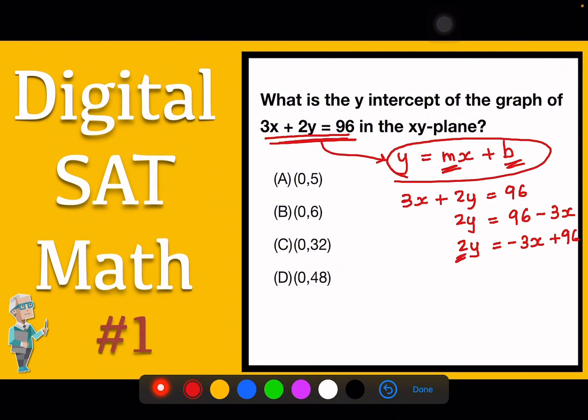And then we don't want 2 here, we want only y. So we can put 2 to the other side. Resulting y equals negative 3 over 2x plus 96 over 2. Final result is y equals negative 3 over 2x plus 48.